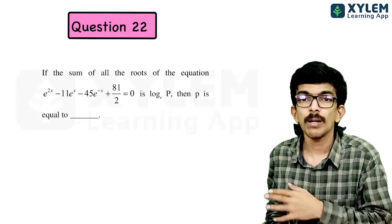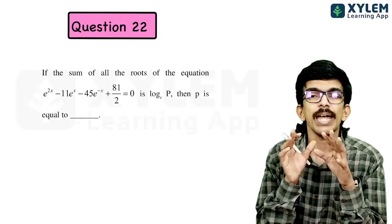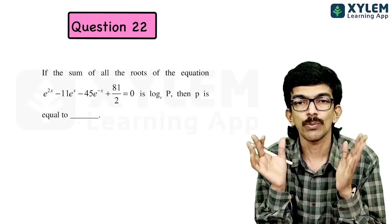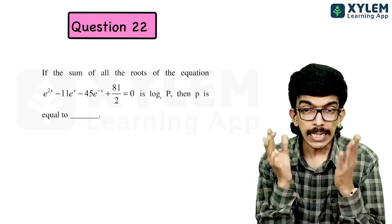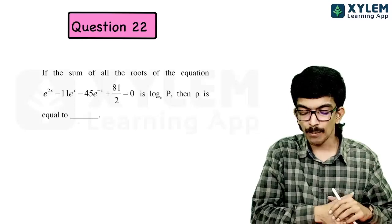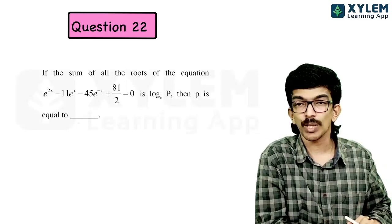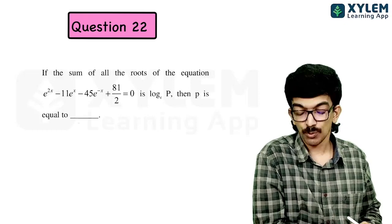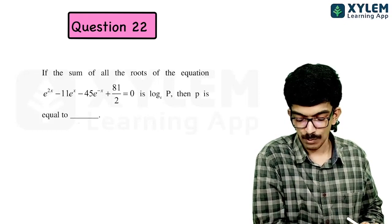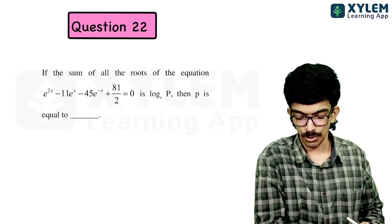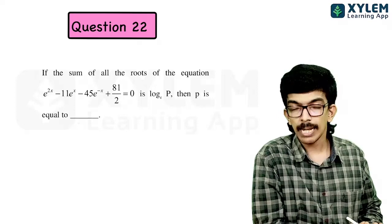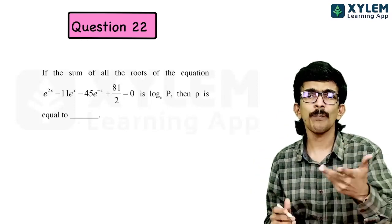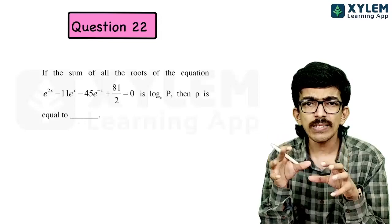This is a harmless-looking question, but it seems the entire country got the answer wrong. The question: the sum of all roots of the equation e^(2x) - 11·e^x - 45·e^(-x) + 81/2 = 0 is log p. Find p. This is a numerical type question.